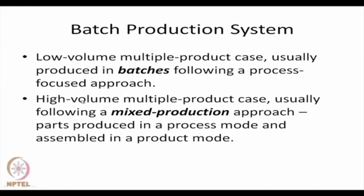Sometimes we have a high volume multiple product case. In such a case, parts are produced in a process mode — that means parts are produced in different departments — whereas they are assembled in a product mode, meaning in a line fashion.